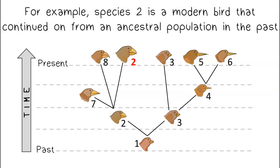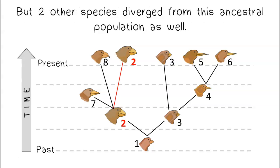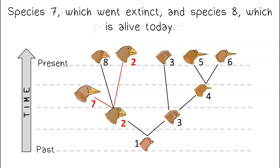For example, species two is a modern bird that continued on from an ancestral population in the past. But two other species diverged from this ancestral population as well: species seven, which went extinct, and species eight, which is alive today.